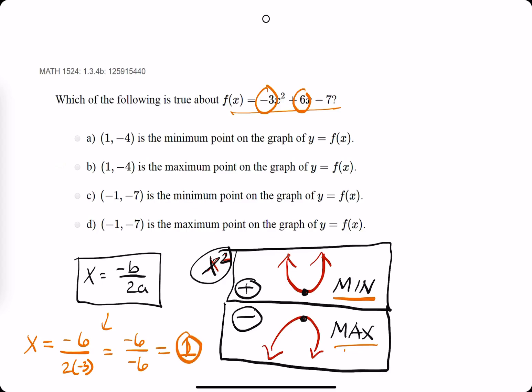So what we find out is that the x value of the vertex or x value of either the max or min is positive 1. So any x values that don't have positive 1, c and d both have negative 1, we can eliminate those.